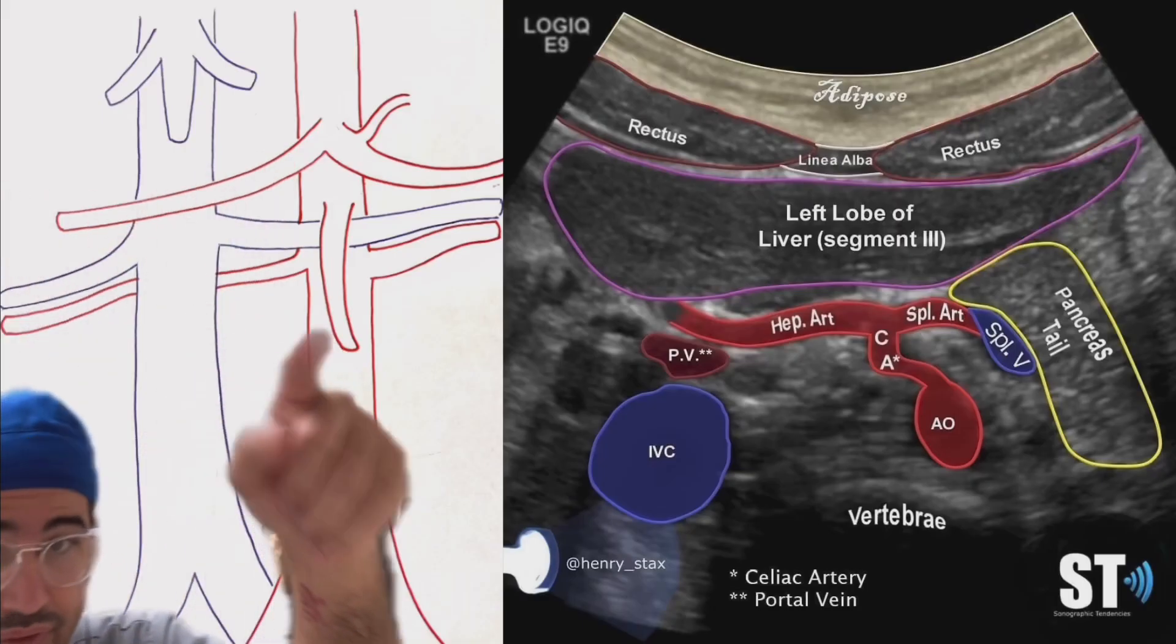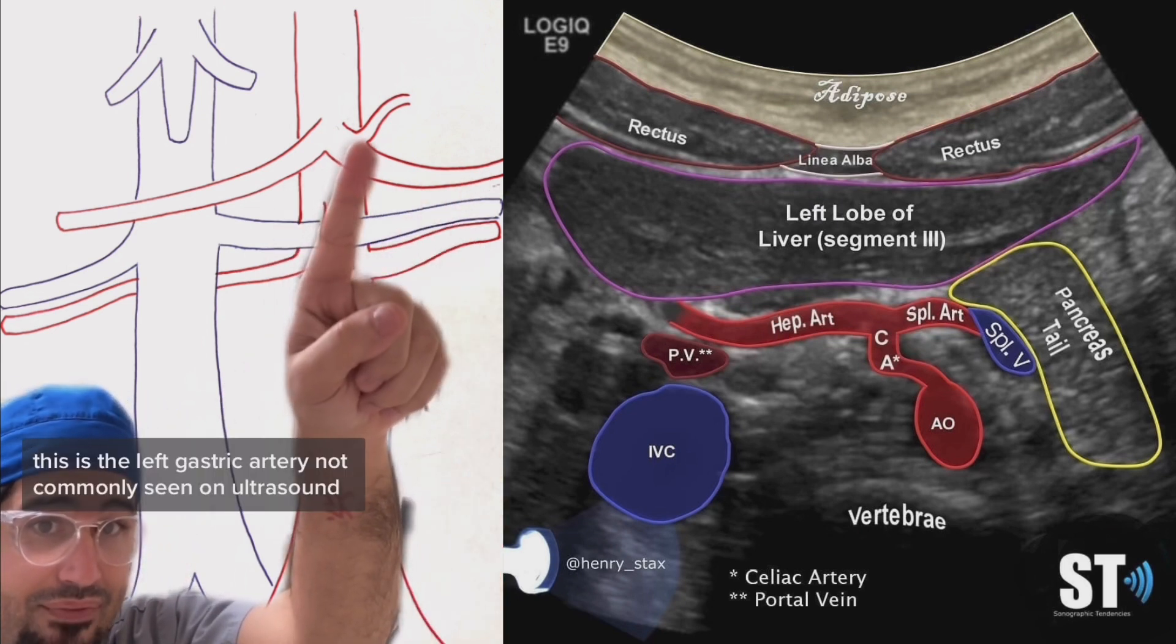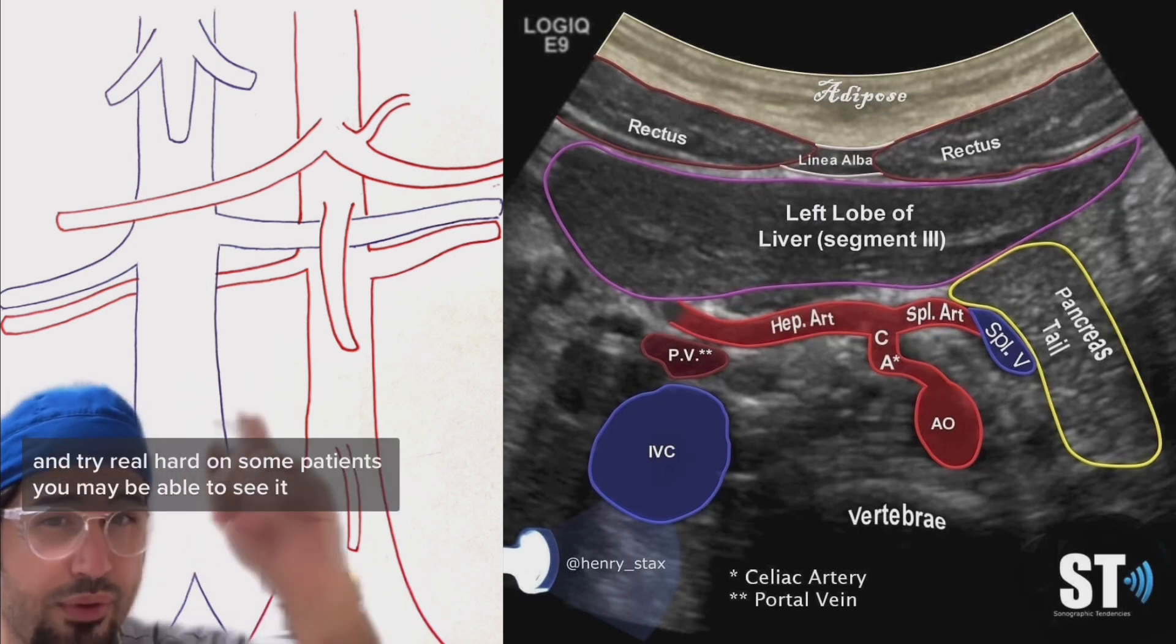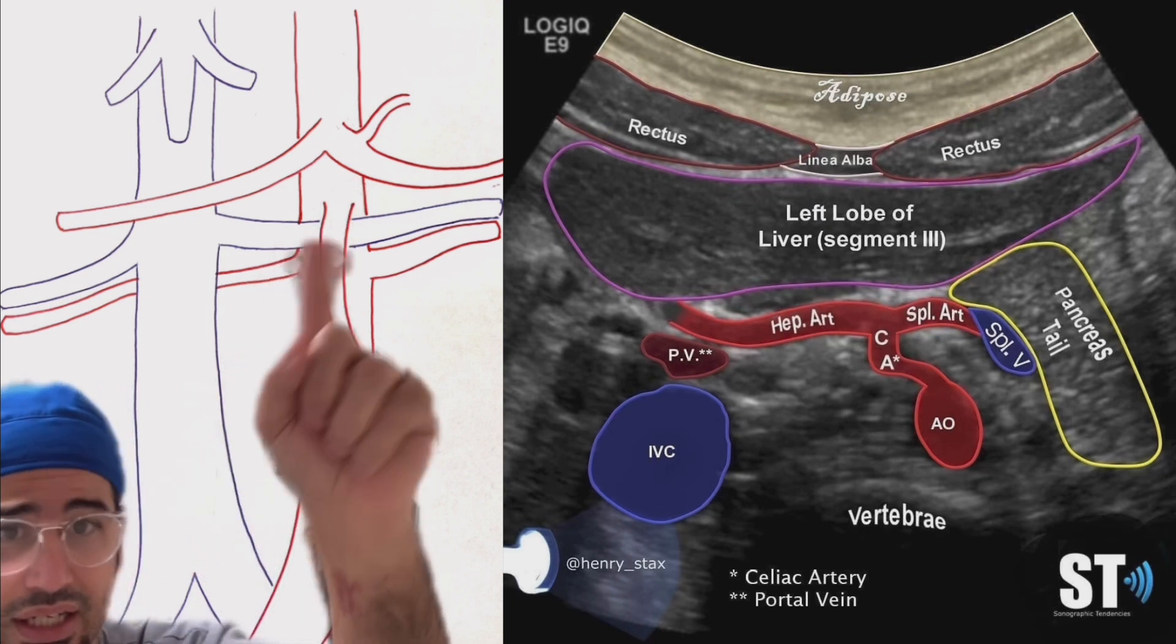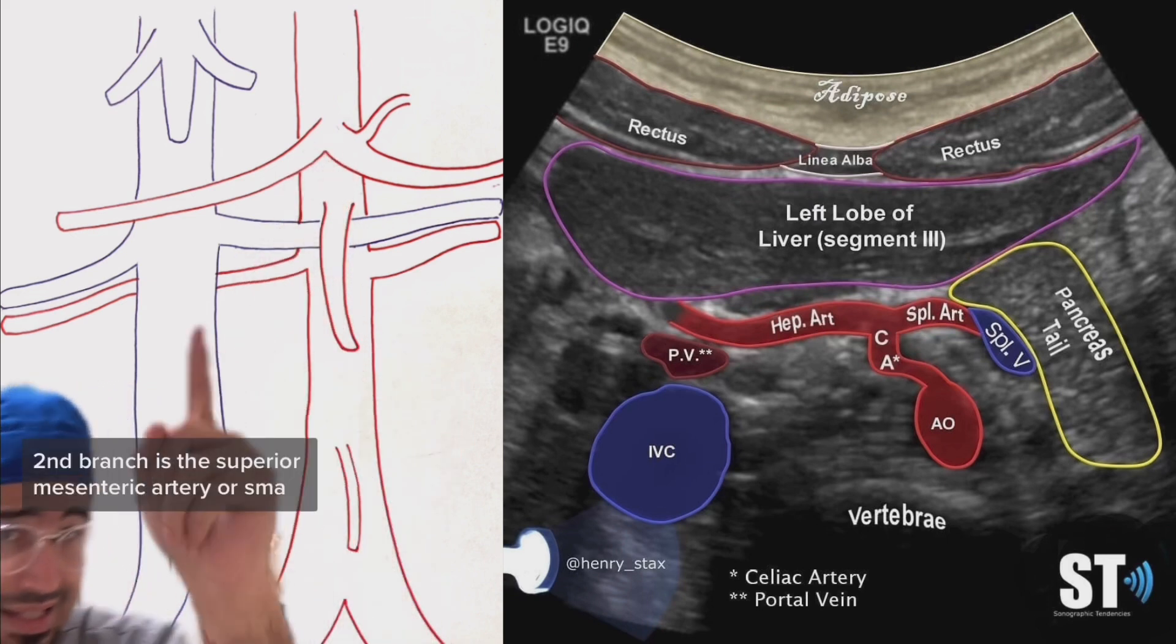So this is the hepatic artery going into the liver, this is the splenic artery going to the spleen, this is the left gastric artery. Not commonly seen on ultrasound, you can struggle and try real hard. On some patients you may be able to see it. Sometimes the left gastric artery comes out of here, has a lot of variation.